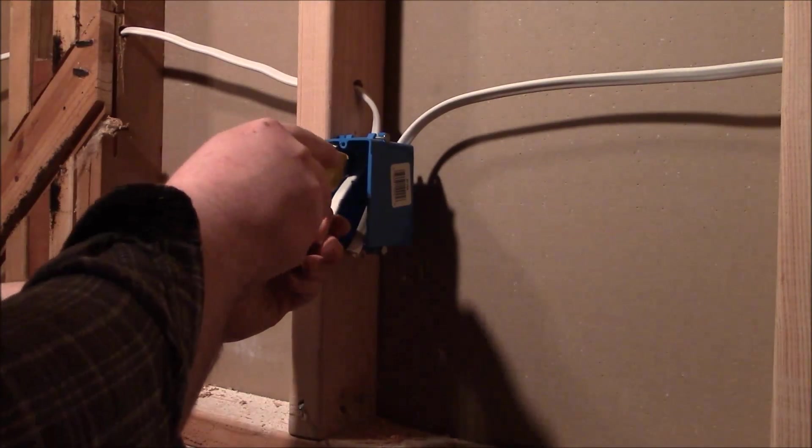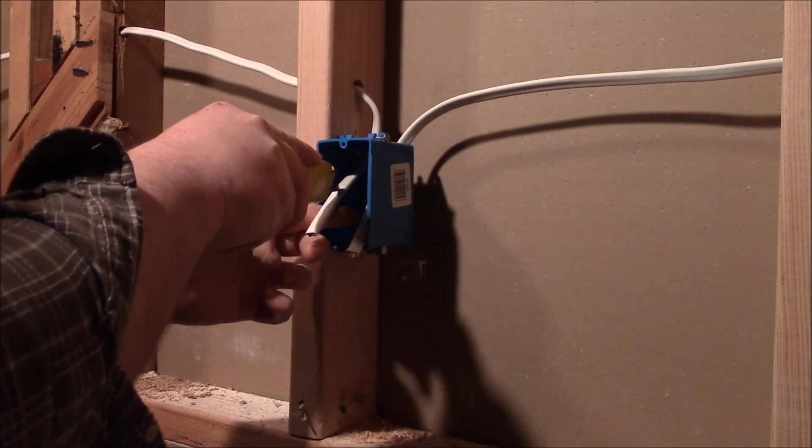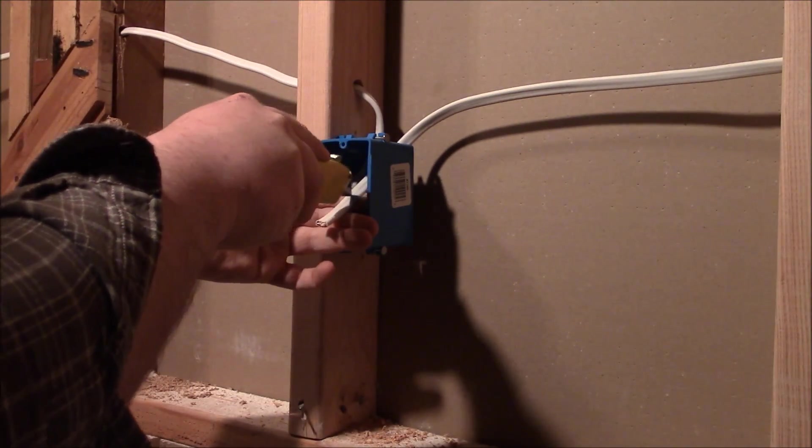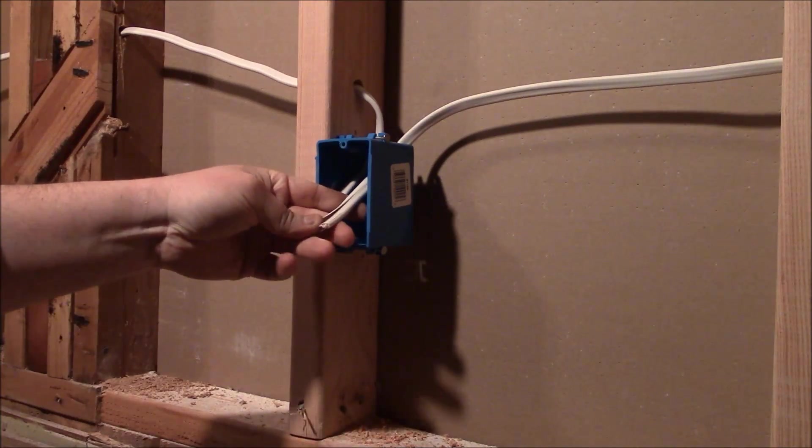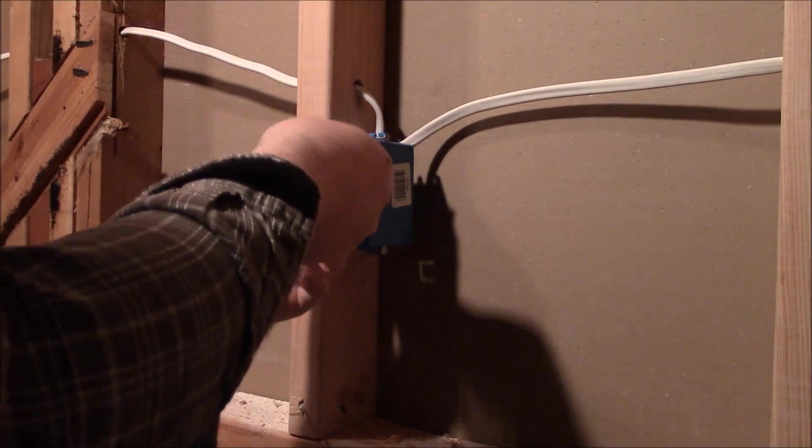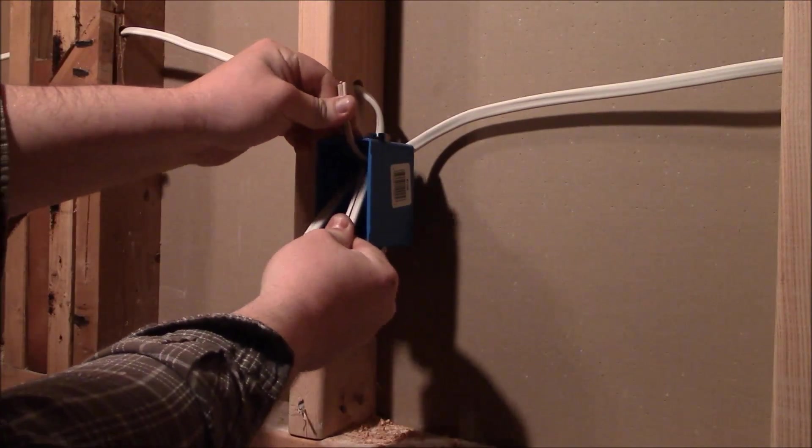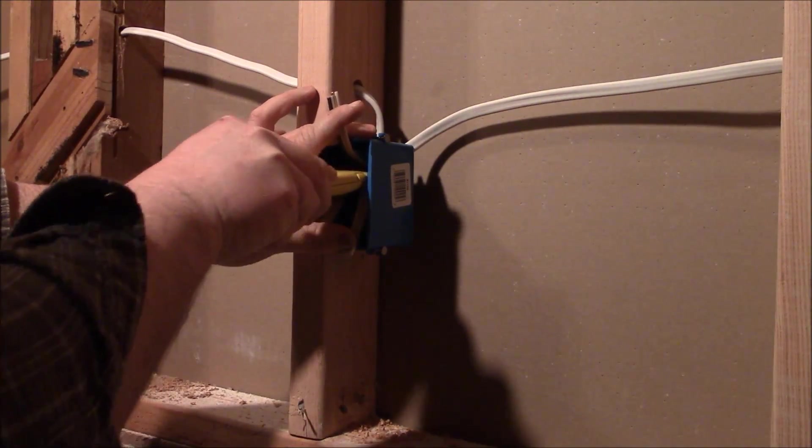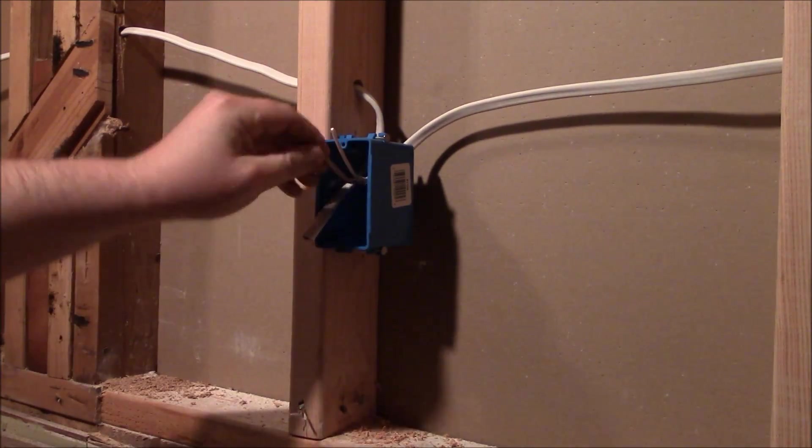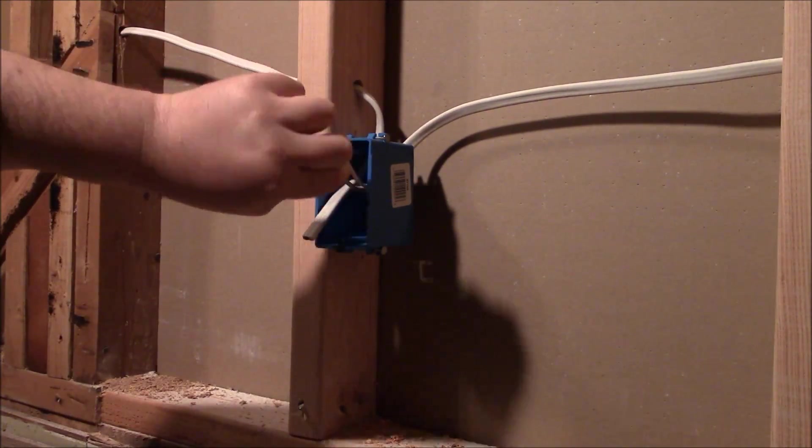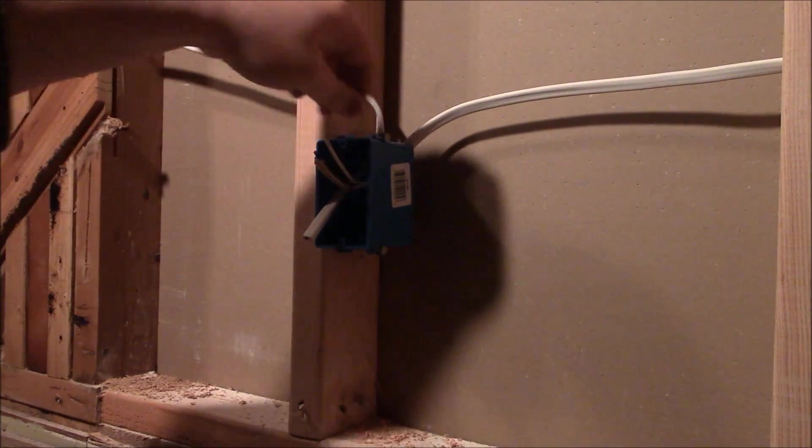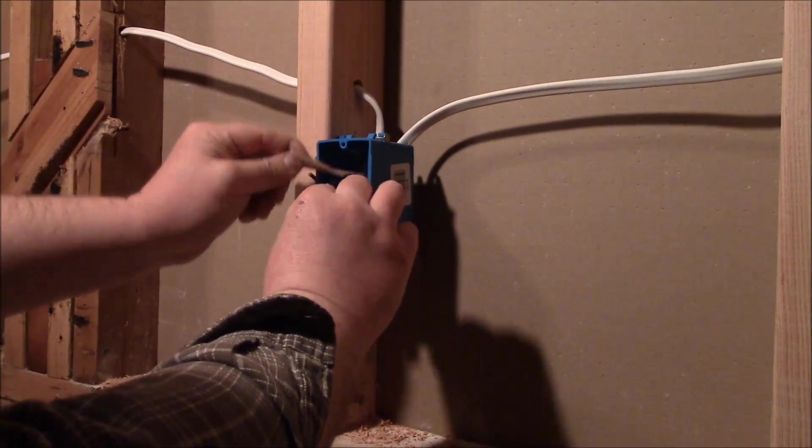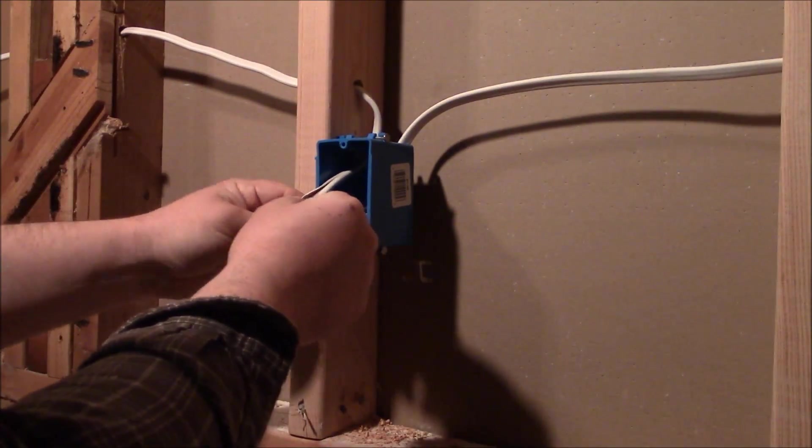So first things first you're going to want to strip the insulation. I like to have a lot of wire exposed. So you pull back the insulation and just get rid of that outer sheathing. And then I also do away with the paper because we don't need that. And repeat.